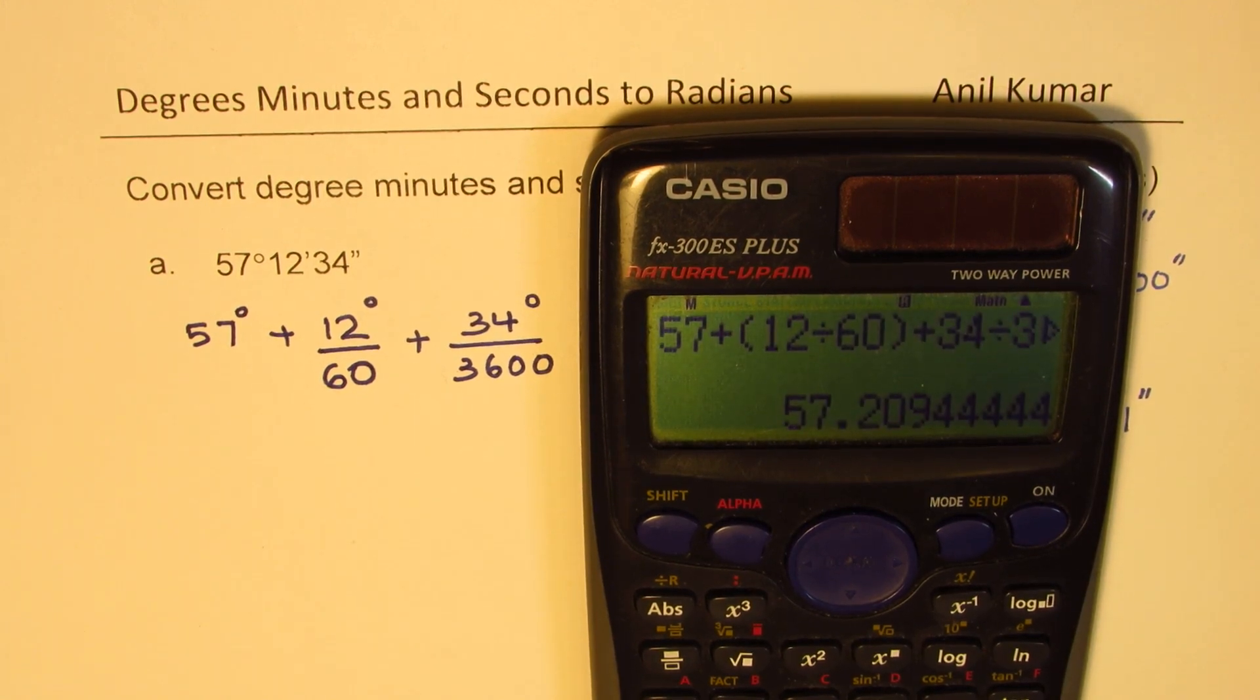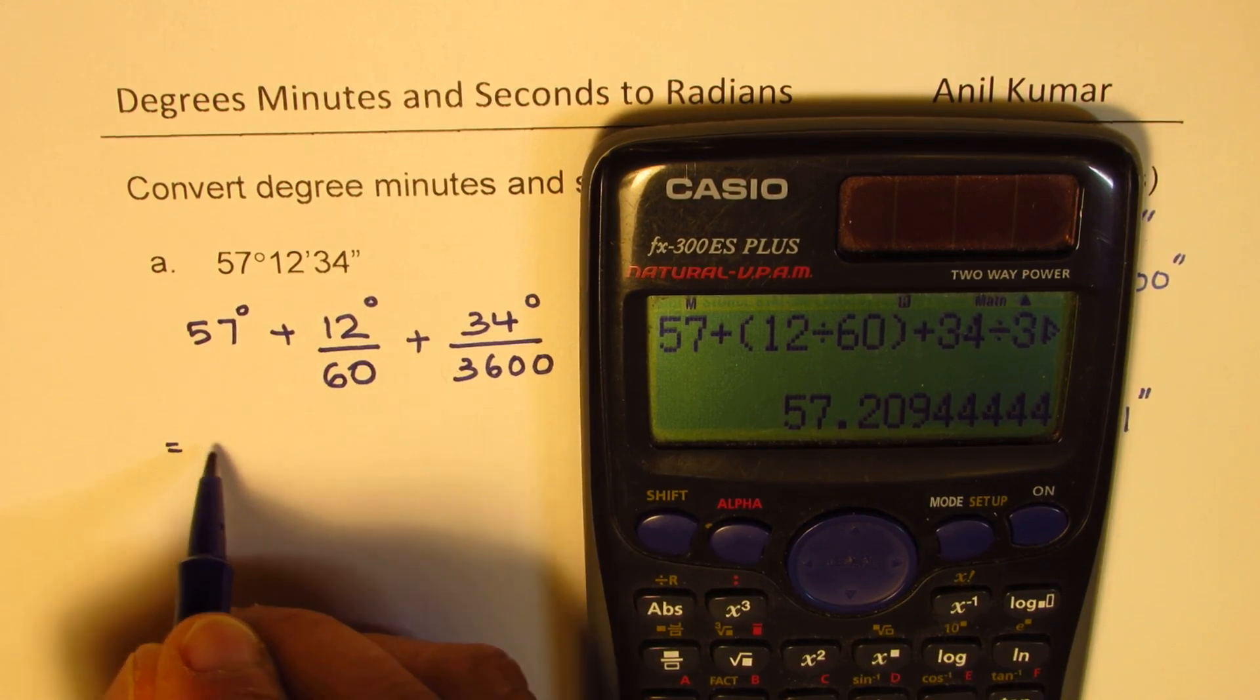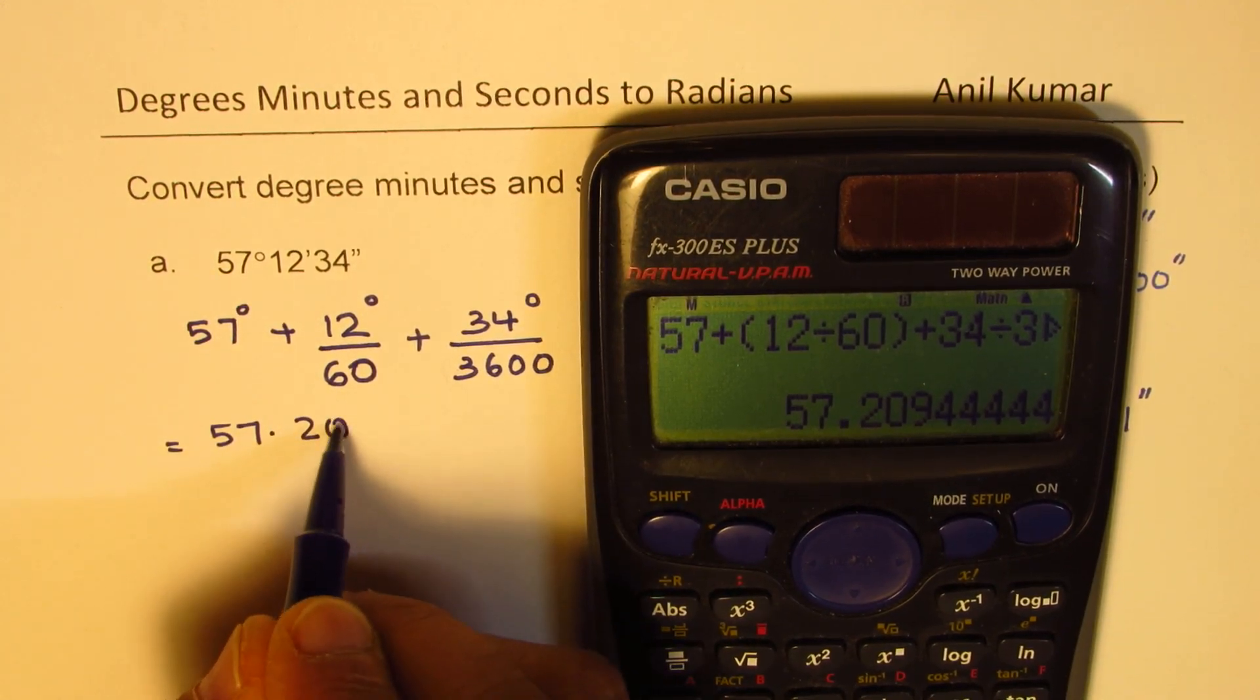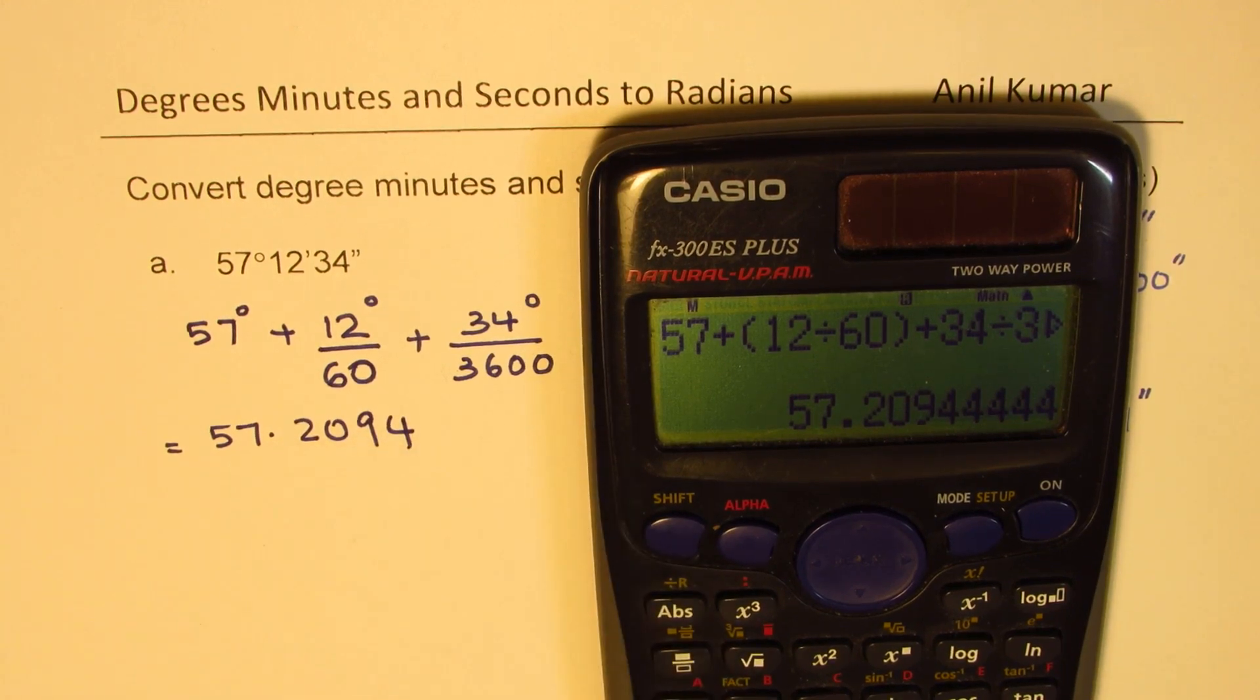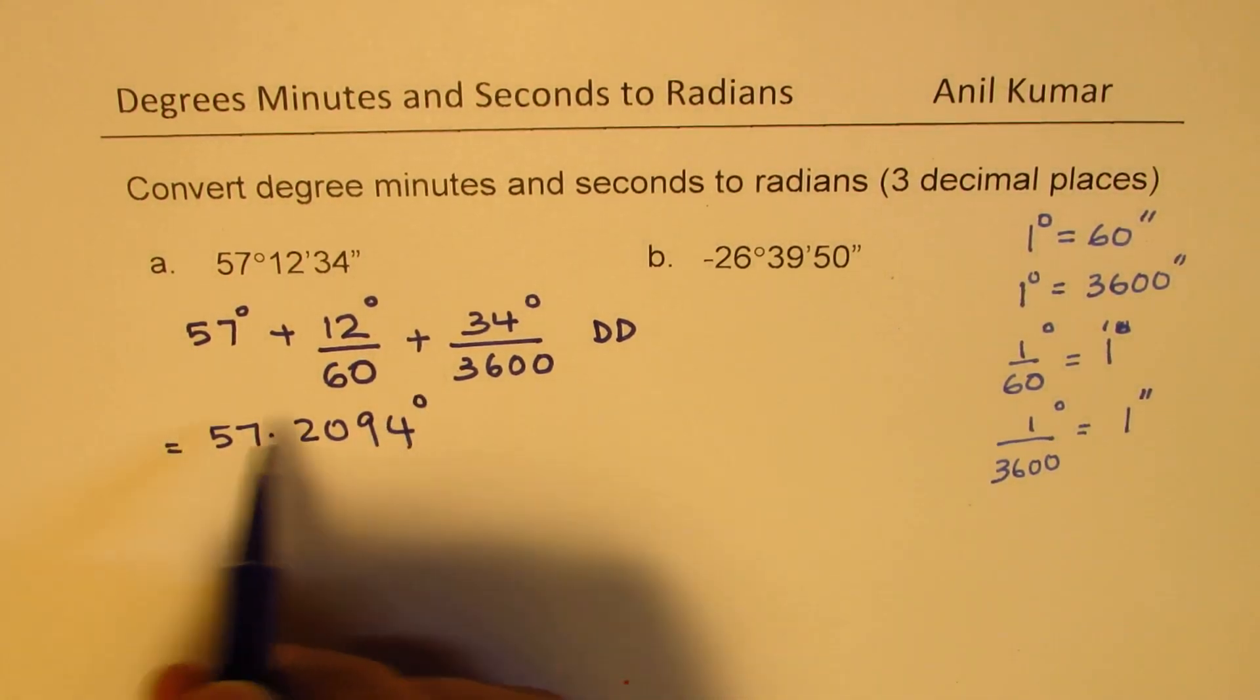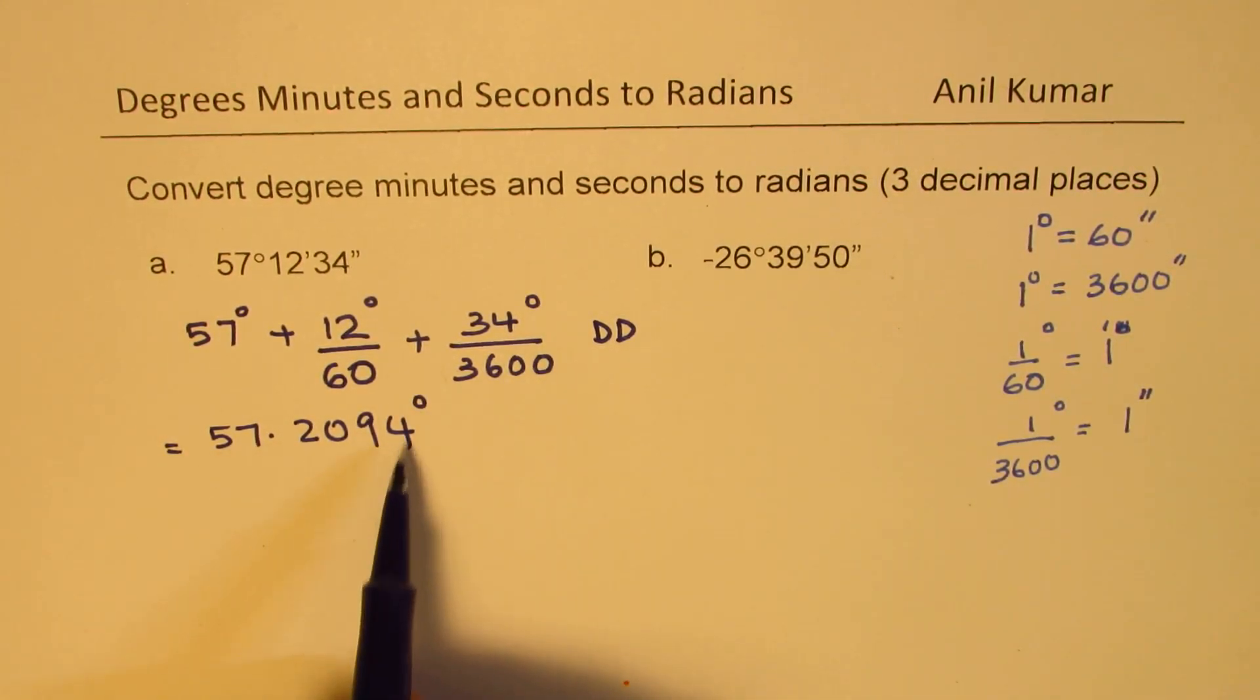And what do we get? We get 57.2094. Let's write it to 4 decimal places. So those many degrees. So first step is to convert to decimal degrees.